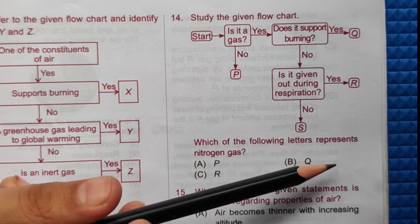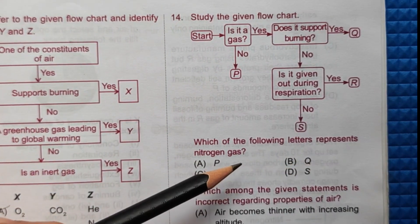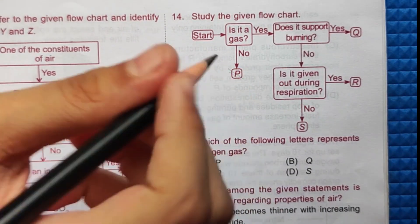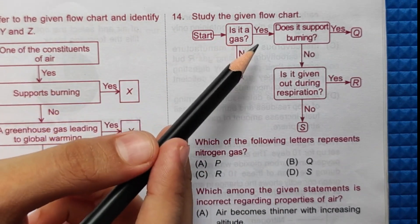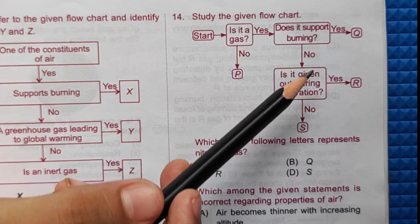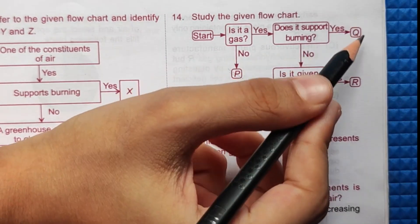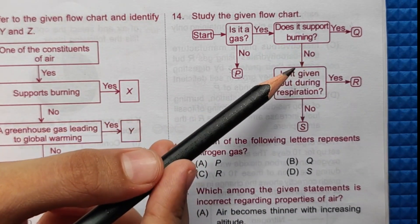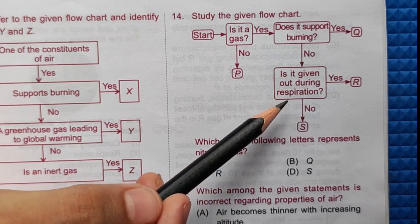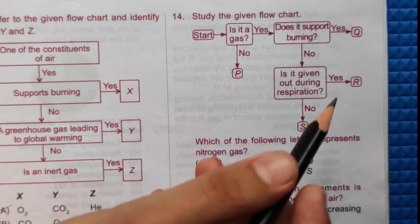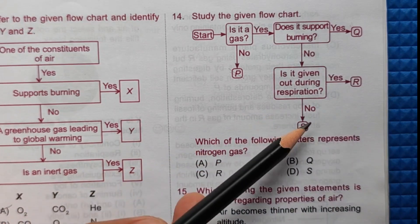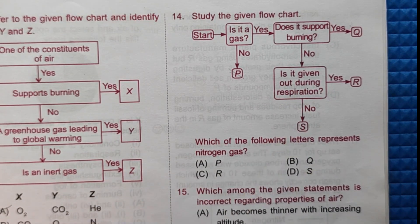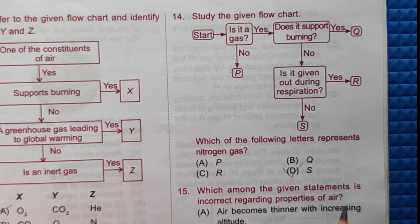Question 14: Study the given flow chart - which letter represents nitrogen gas? A gas that is not a gas is P, not nitrogen. A gas that supports burning is oxygen, also not nitrogen. A gas that does not support burning and is given out during respiration is carbon dioxide. A gas that does not support burning and is not given out during respiration is S, which is nitrogen. The correct answer is option D.